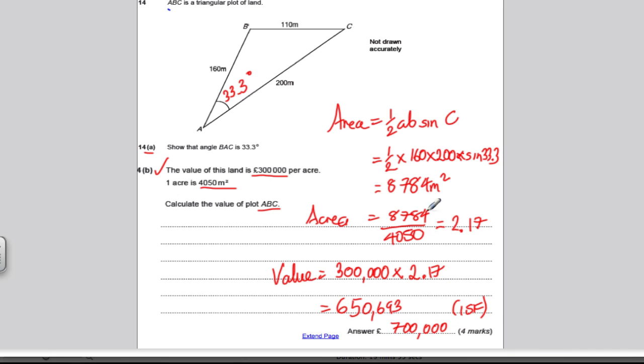So again, quite an easy question for four marks here. Last question, you're going to need to use both the area of a right angle triangle, base times height divided by 2, and this half AB sine C. So see if you can get this last question here. Pause the video, have a go, then watch my answer.